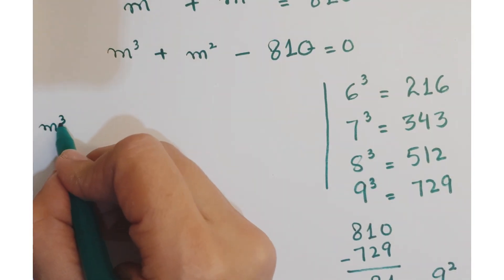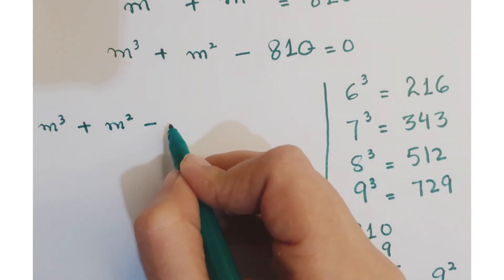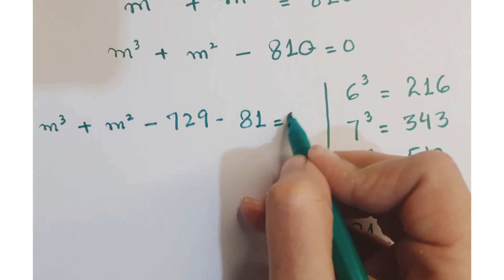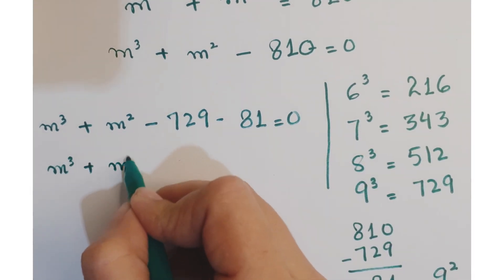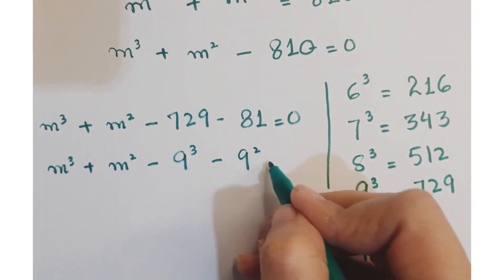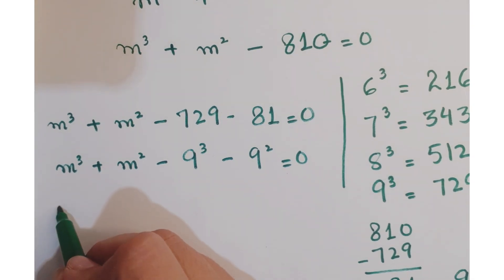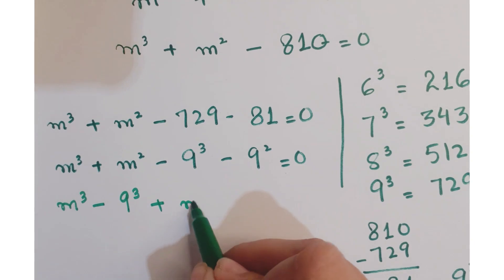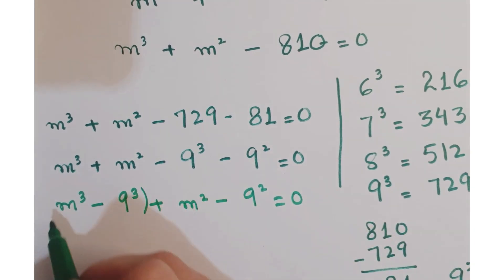So we can write this as m³ + m² − 729 − 81 = 0. Further, you can write it as m³ + m² − 9³ − 9² = 0. Now rearrange the equation as m³ − 9³ + m² − 9² = 0.